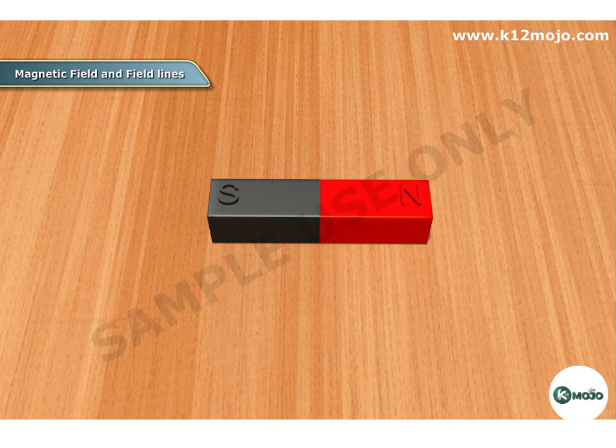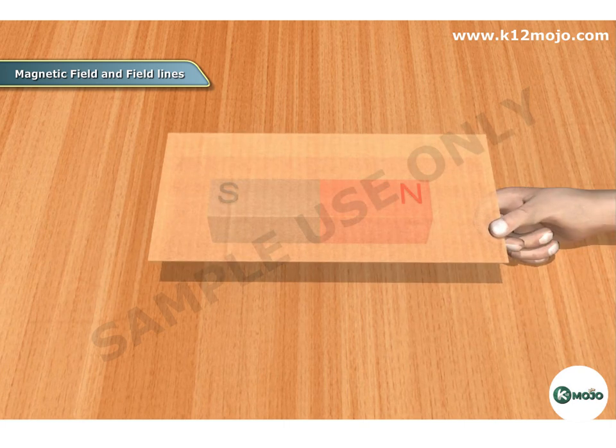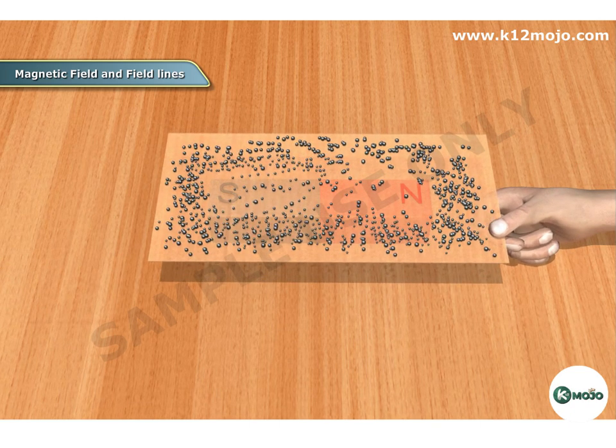Procedure: Step 1 — Keep the bar magnet on the board and sprinkle all iron filings on the magnet. Step 2 — Then tap the board gently.